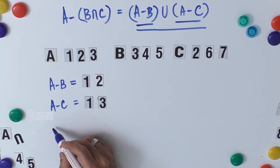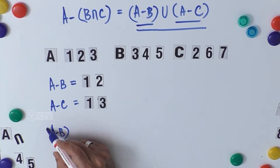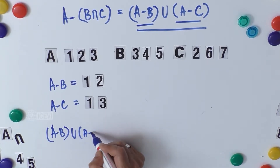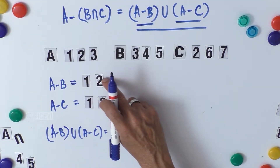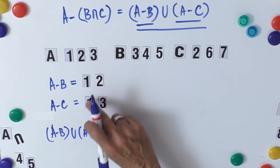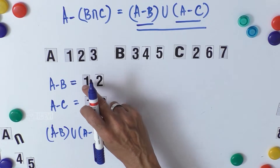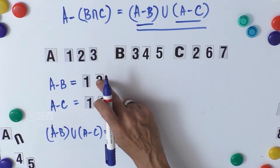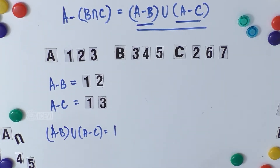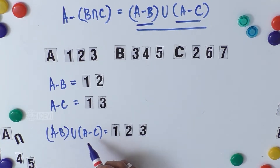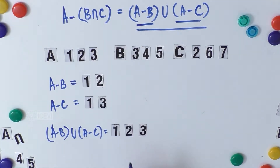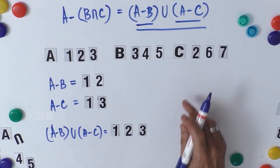Now we take the union of A minus B and A minus C. We take the distinct objects from {1, 2} and {1, 3}. The element 1 should not be repeated, so A minus B union A minus C equals {1, 2, 3}.